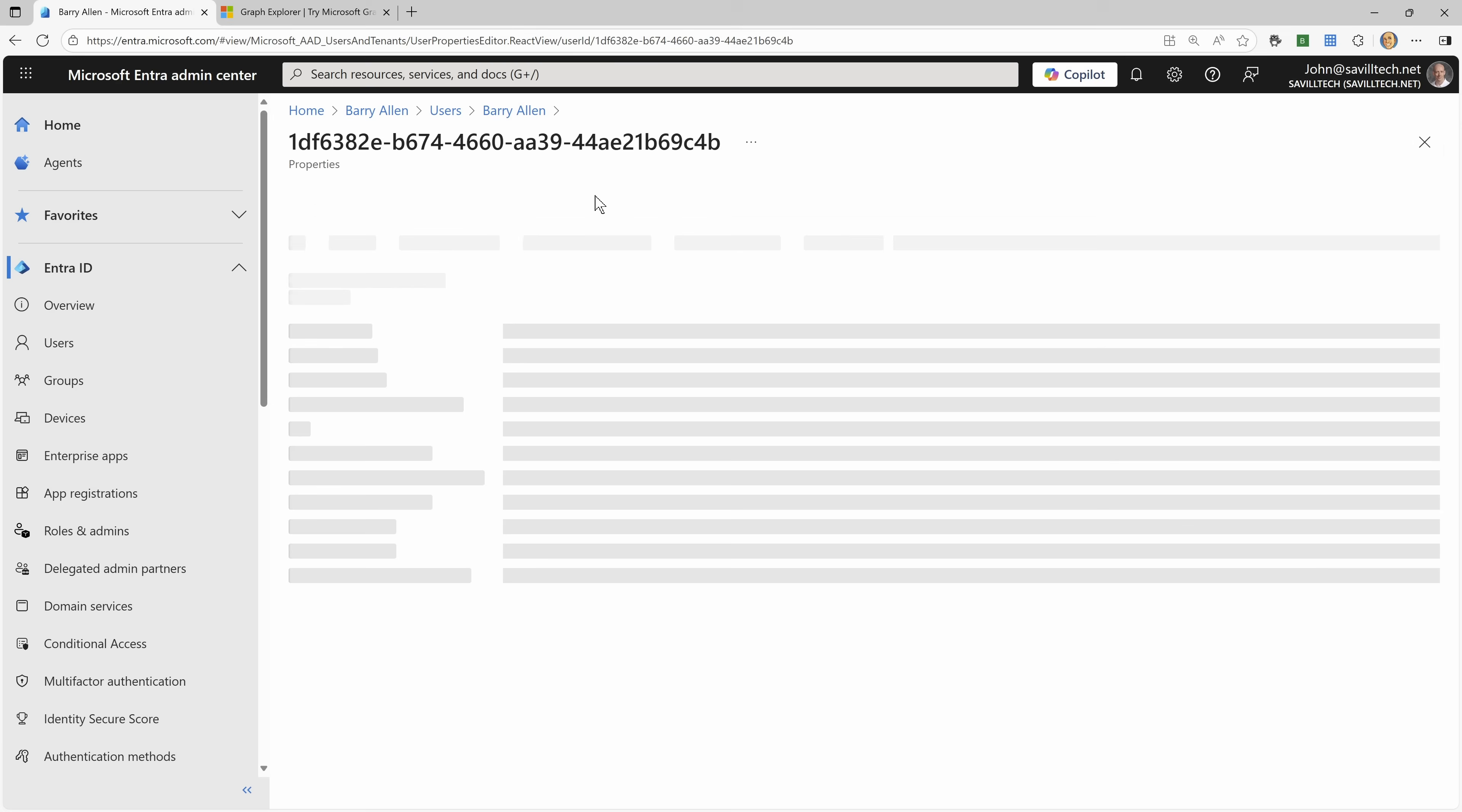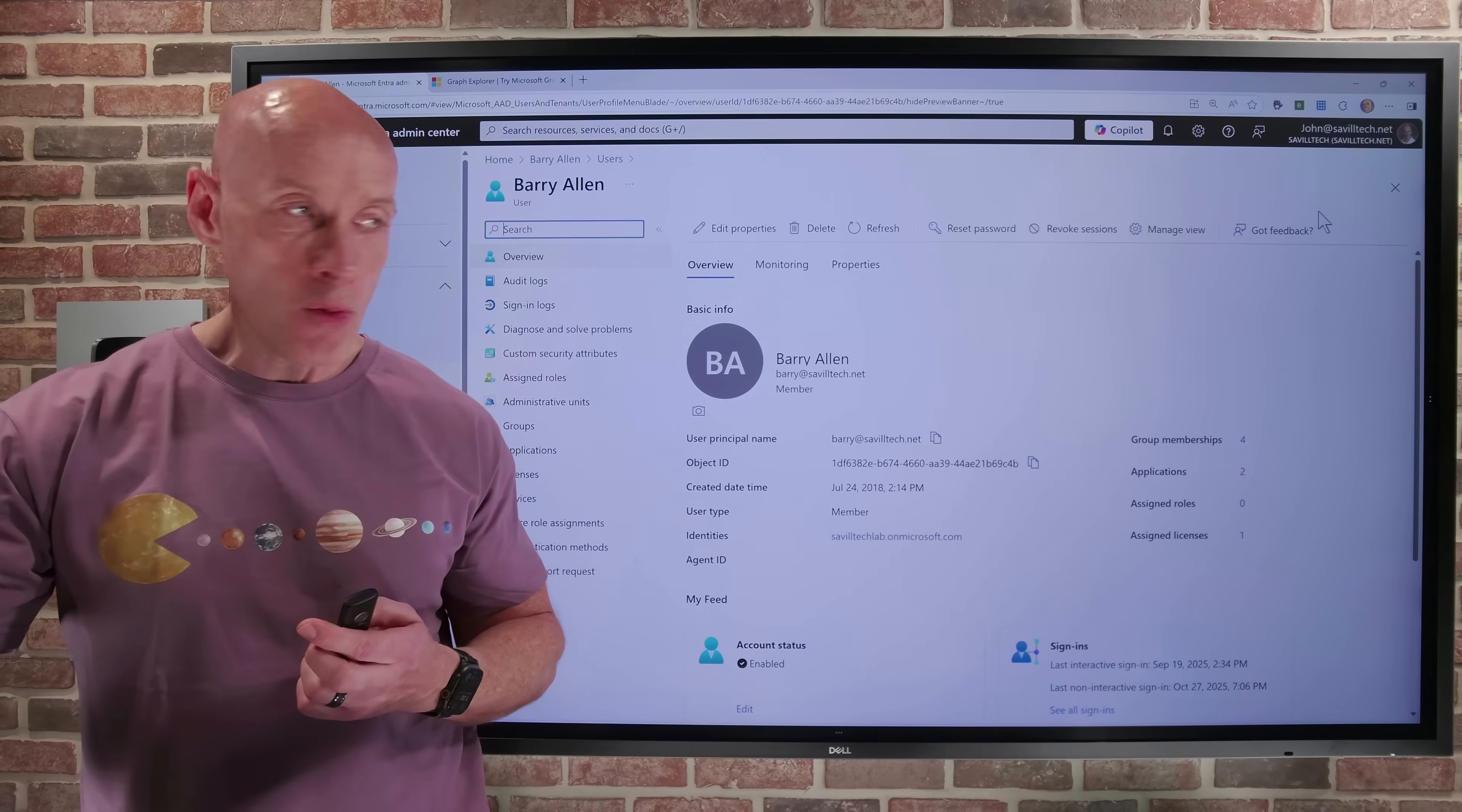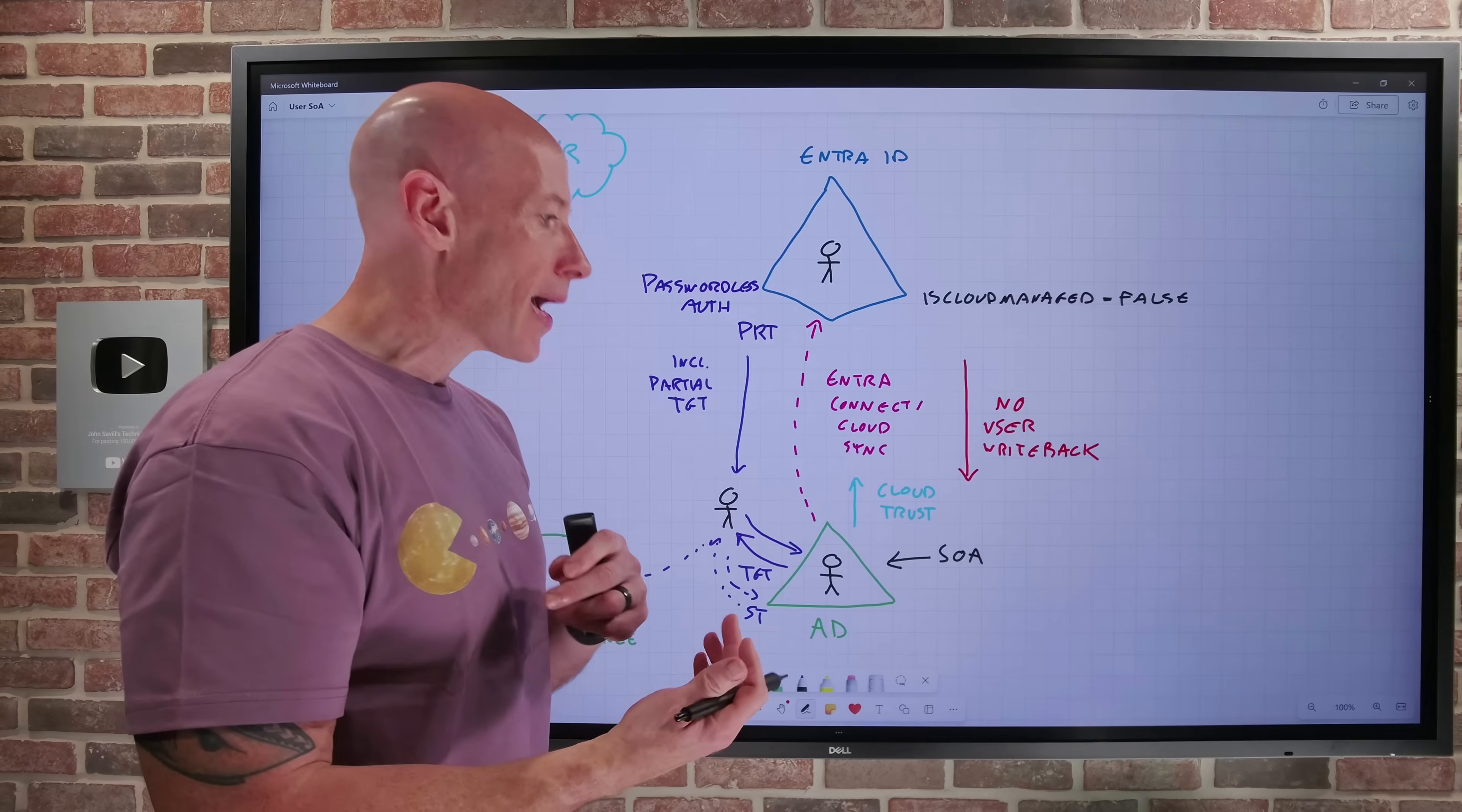But additionally, now edit properties, they're not gray anymore because it is now the source of authority has been changed. That's the key thing we have done now. And again, just to be super clear, I'm doing this one at a time in the portal. You would write a script, do this at a larger scale.